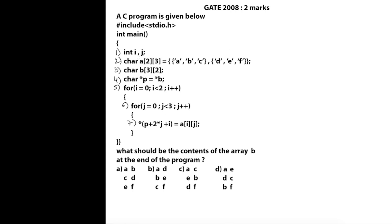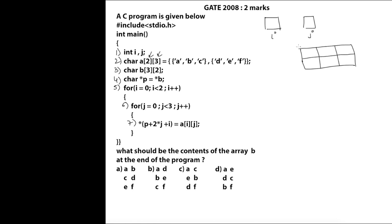In this question we have two variables i and j declared in line number 1. In line number 2 they give a 2D array with 3 columns and 2 rows. So this is a 2D array with 2 rows (index 0 and 1) and 3 columns (index 0, 1, 2), pointed to by A at its base address. The data stored is A, B, C, D, E, F.